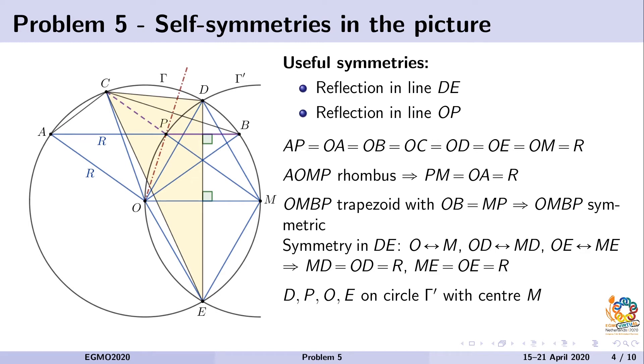First part is finished. Now we go to the second symmetry over line OP. We remember that APMO is a rhombus,